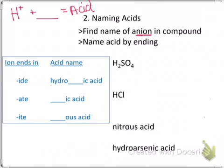The anion is going to end in one of three suffixes: -ide, -ate, or -ite. Depending on what the ending of the anion is, that's going to determine what the acid name is.